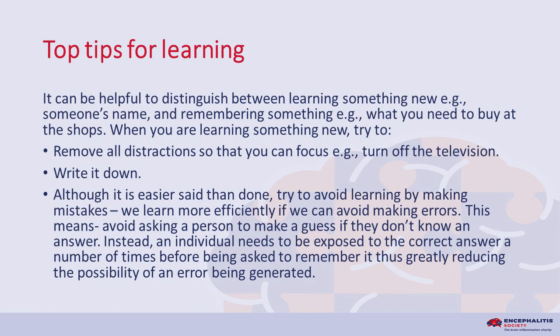Top tips for learning. It can be helpful to distinguish between learning something new, for example someone's name, and remembering something, for example what you need to buy at the shops. When you are learning something new, try to remove all distractions so that you can focus — for example, turning off the television. Write it down. Although it is easier said than done, try to avoid learning by making mistakes. We learn more efficiently if we can avoid making errors. This means avoid asking a person to make a guess if they don't know an answer. Instead, an individual needs to be exposed to the correct answer a number of times before being asked to remember, thus greatly reducing the possibility of an error being generated.